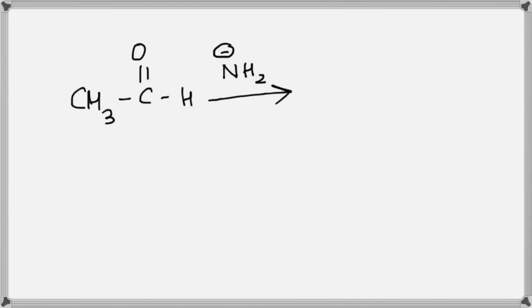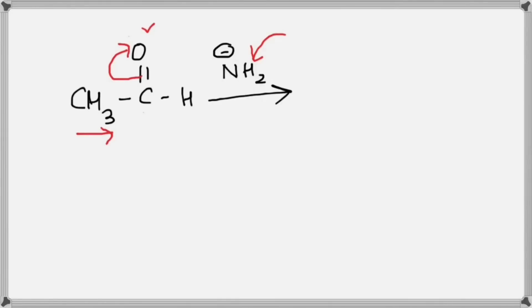Let's take another example. This time we have an aldehyde CH₃-C=O-H, and we bring in a negatively charged group NH₂⁻, also called an amide group. Due to the presence of this external group NH₂⁻, the double bond will show an electromeric effect and the electrons will shift. CH₃ is pushing electrons towards the carbon, and since oxygen is more electronegative, electrons move towards oxygen. This bond breaks, oxygen takes up both electrons, and what we get is CH₃-CH with the carbon losing electrons.